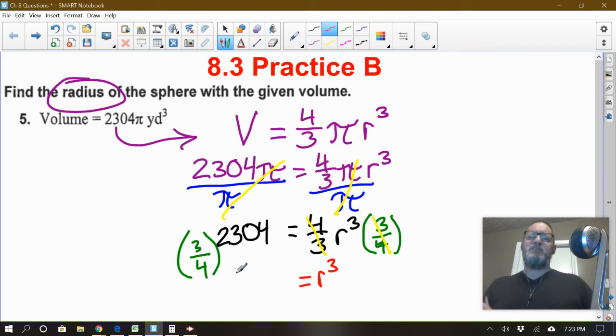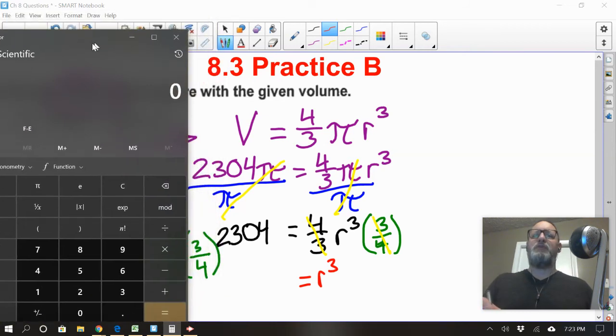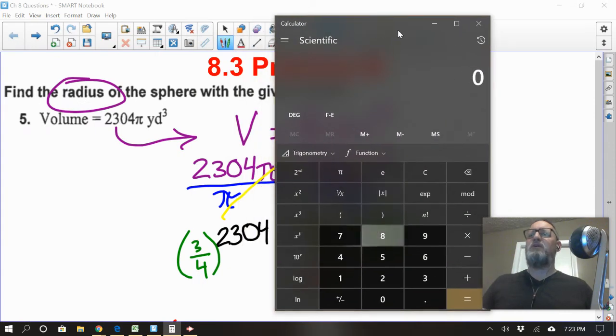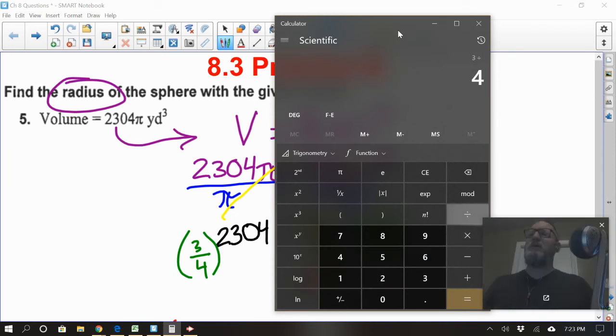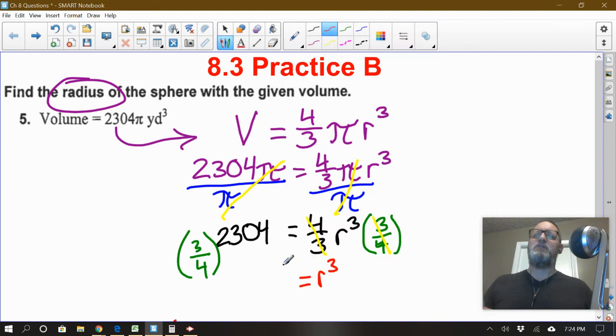But I have to solve this. Let's shorten things up and just grab the calculator. I did say you guys could use calculators for this. What do we have? Three fourths times 2,304. So I'm going to make three fourths into three divided by four and times 2,304. And that equals 1,728.